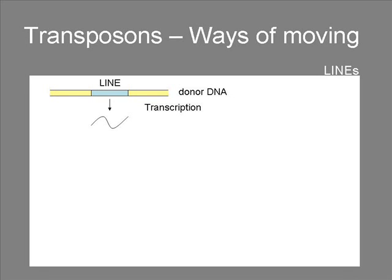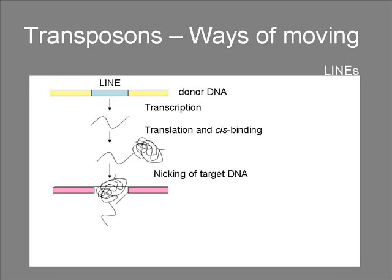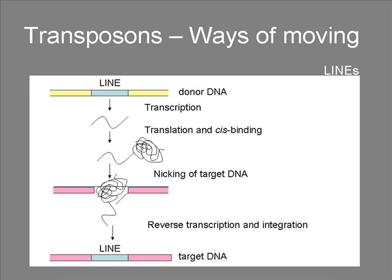The way LINEs transpose is slightly different and a bit more simple than the mechanism of LTR elements. First, the element is transcribed into RNA. The RNA moves into the cytoplasm, where it is translated into protein. The protein binds directly to the mRNA it was translated from. The protein-RNA complex moves back into the nucleus. The protein nicks the target DNA at the point of insertion, and the 3' end is used to initiate reverse transcription. After reverse transcription, the RNA is cleaved off, the second strand of DNA is synthesized, and the loose ends are ligated to the host genome.